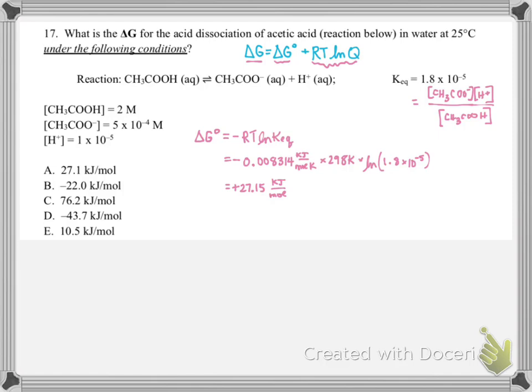It makes sense that this number would come out to be positive because our Keq is really small — it's less than 1. We know that we're reactants-favored and that we would expect a positive delta G standard. So we figured out that term for our overall equation, and now we need to figure out the RTlnQ portion.